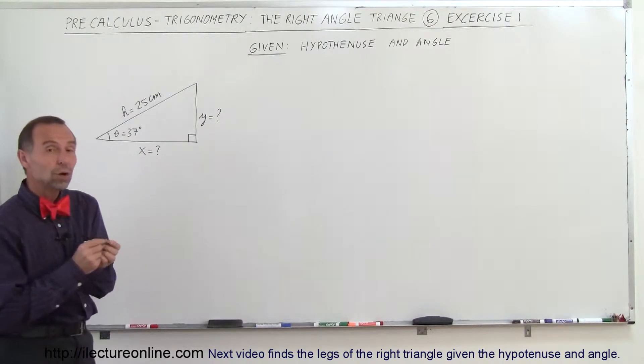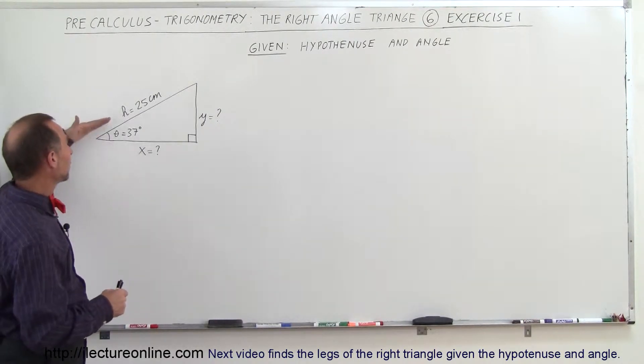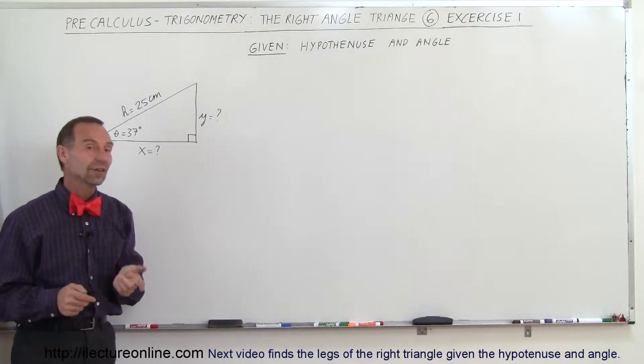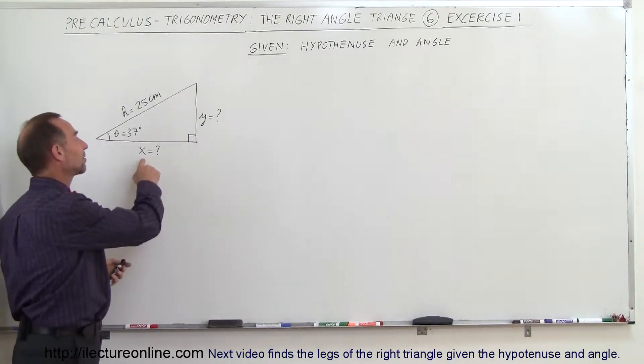In this example, the hypotenuse is known and the angle is known. We have a hypotenuse that has a length of 25 centimeters and an angle here of 37 degrees. We're supposed to find x and y.